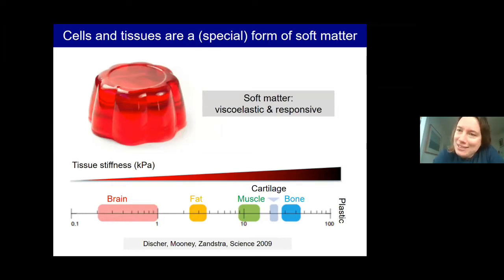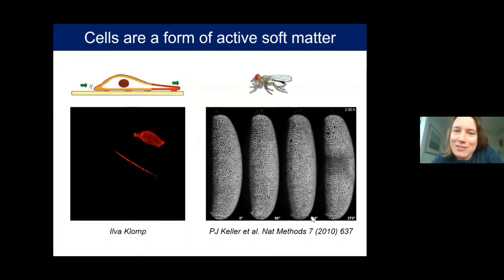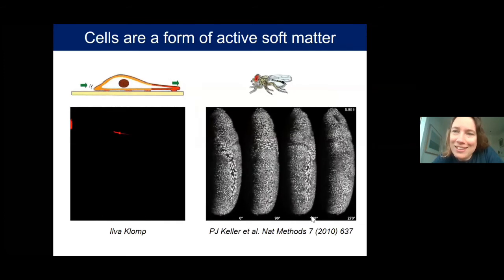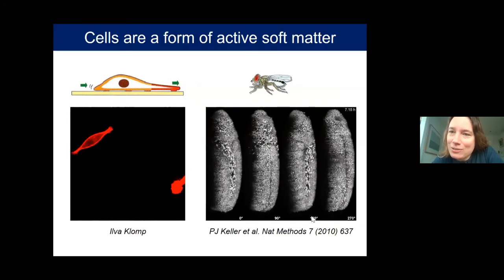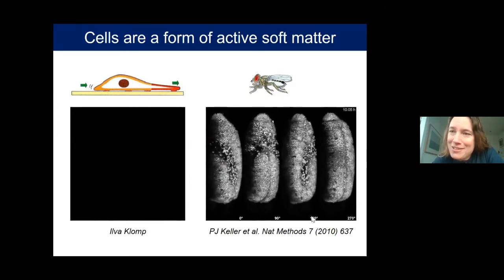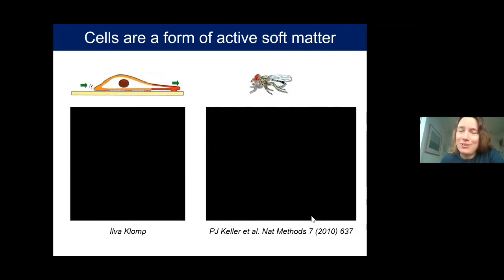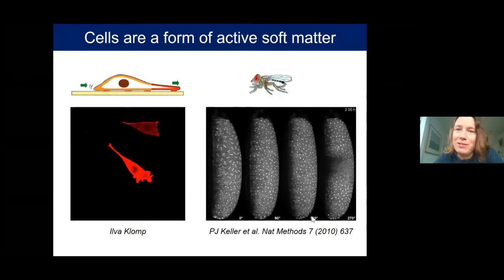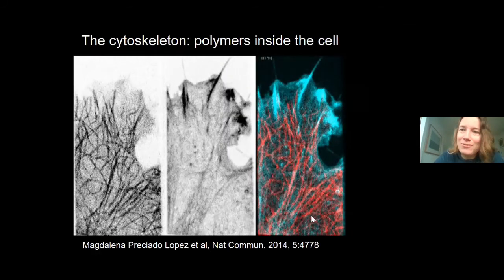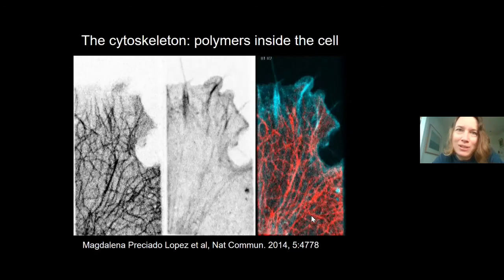Living matter is a special form of soft matter. Under the microscope you can see a migrating cell or a developing fruit fly embryo — clearly this is soft matter that can generate forces and deform itself. This active behavior originates in the cytoskeleton, which will be the main subject of this talk.